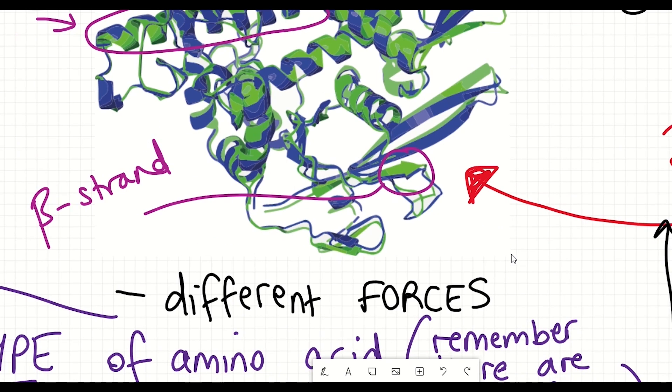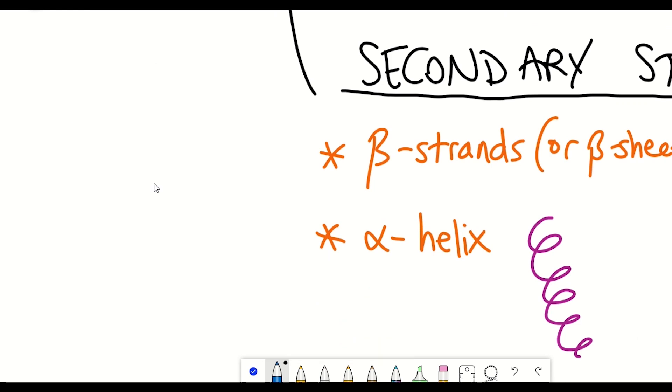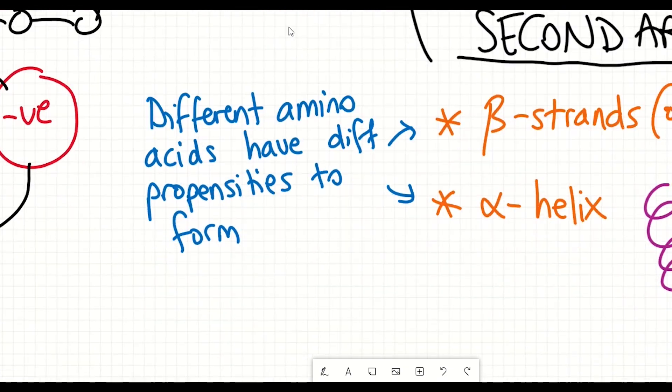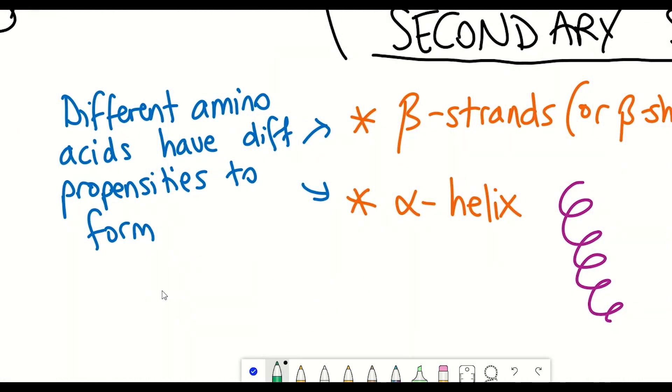And it turns out that different amino acids have different propensities of forming either beta strands or alpha helices. And so already we've got some information about amino acid sequence and what the secondary structure could be. But looking at different amino acids propensities of forming beta sheets or alpha helices is nowhere near sufficient to be able to create a 3D final structure of a protein. We need a lot more information.